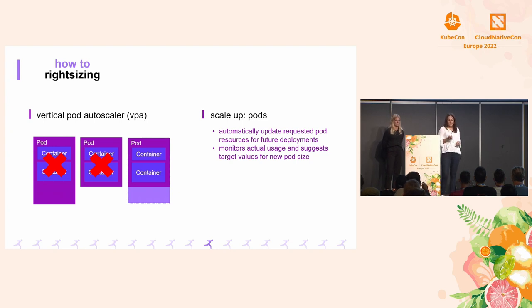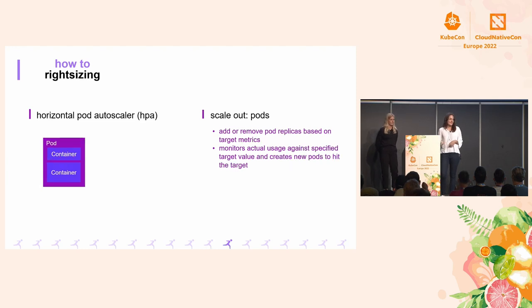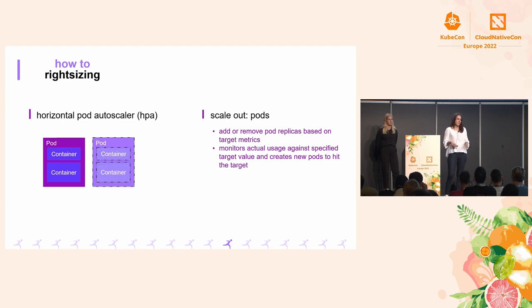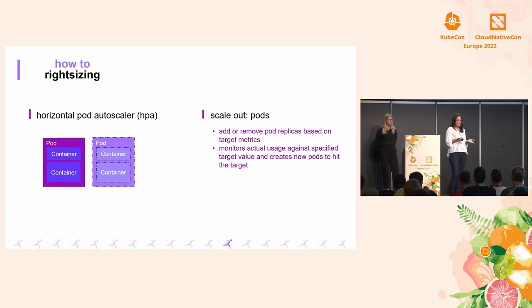That's for stateful workloads. But of course we also have stateless workloads — that's where the Horizontal Pod Autoscaler is for. This one monitors the actual usage of the pods and adds or removes pods based on the target value — the target CPU or memory you define in the autoscaler. That was it at a pod and workload level. Then we have the infrastructure level, meaning nodes.